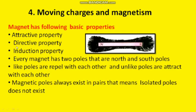The next is the directive property. If you suspend a magnet from a rigid support, it shows the geographical north and south. Based on this concept they made the compass — a small magnetic needle pivoted over a pin that shows the geographical north and south directions.